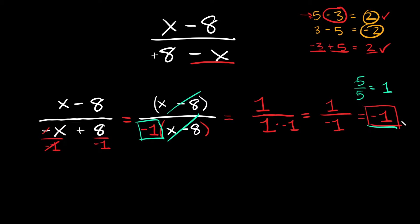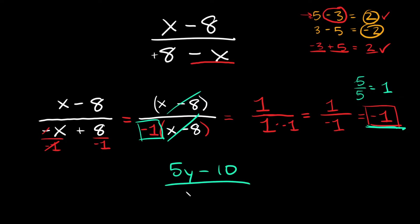This is really important: whenever you have opposite factors — whenever they're basically just flipped from each other — your answer will always be negative 1. For example, 5y minus 10 over 10 minus 5y would simply equal negative 1.